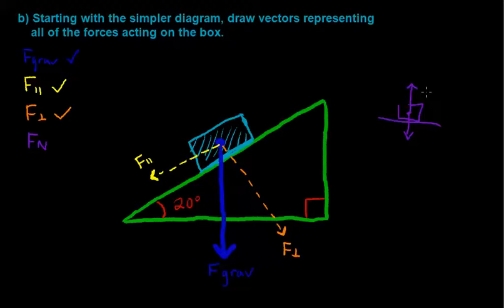The same thing is happening on our ramp. We have this perpendicular component of gravitational force acting into the surface of the ramp, but our box is not accelerating into the ramp, it's only accelerating down the ramp.